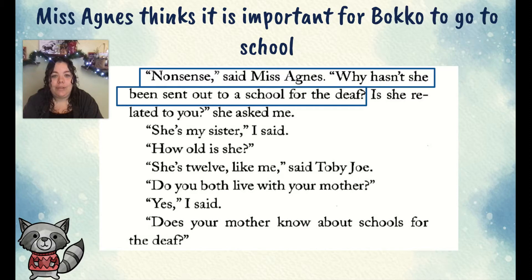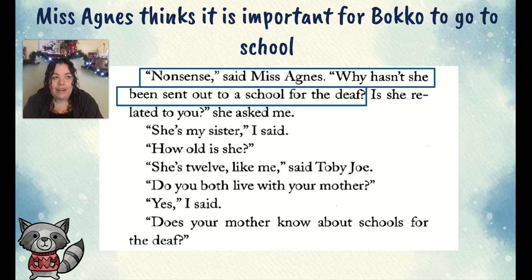Pause right here and read this section. Now look at this first line: 'Nonsense,' says Miss Agnes. 'Why hasn't she been sent to a school for the deaf?' Obviously, when Miss Agnes says 'nonsense,' she thinks it's crazy that Boko is not going to a school for the deaf — she's surprised that no one has sent her yet.